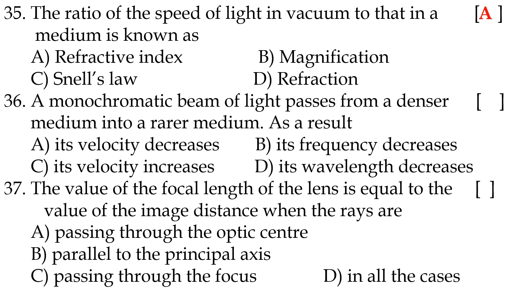Thirty-sixth question: a monochromatic beam of light passes from a denser medium into a rarer medium; as a result, option C, its velocity increases. Thirty-seventh question: the value of the focal length equals the image distance when the rays are option B, parallel to the principal axis.